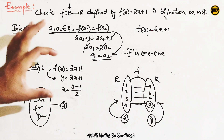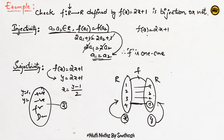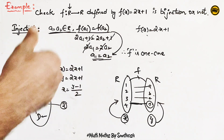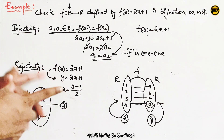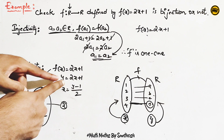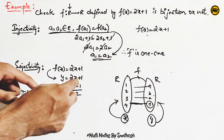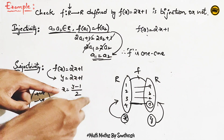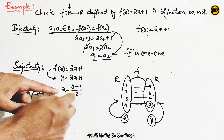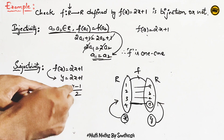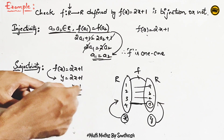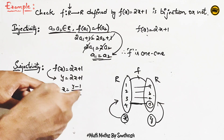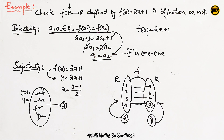Let's look at a small example for surjection. If you choose a value of y, you can find a corresponding value of x. If the x values can always be determined, then this confirms it is a surjection.